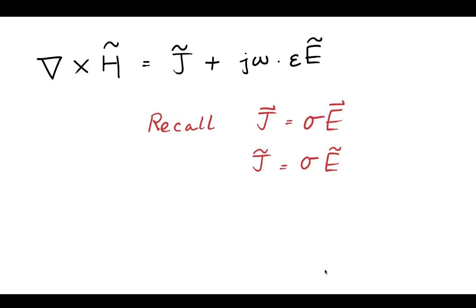Now, recall that we have this other relationship, which is that the current J is equal to sigma E. So, we have a relationship between current density and the electric field, and we can rewrite that in phasors as well.